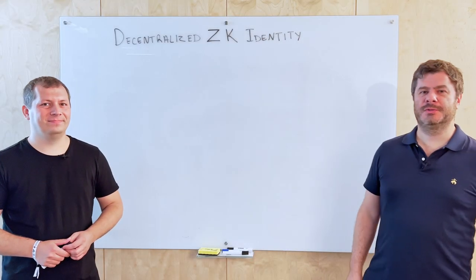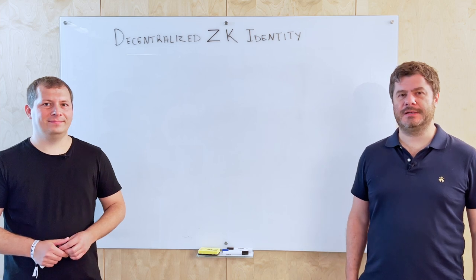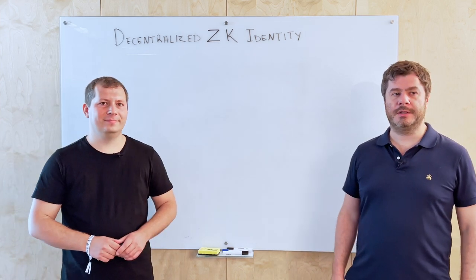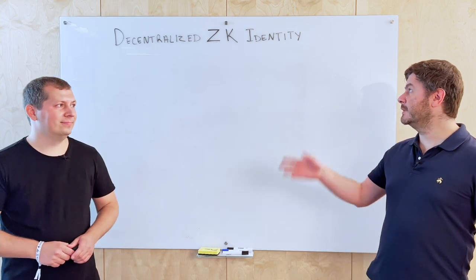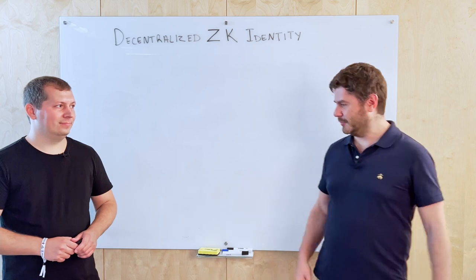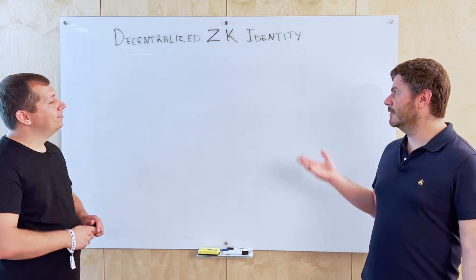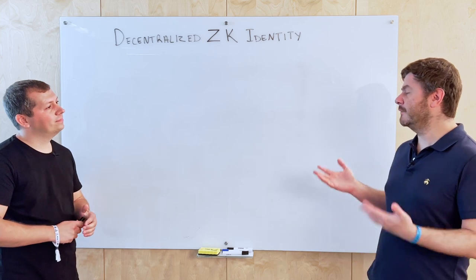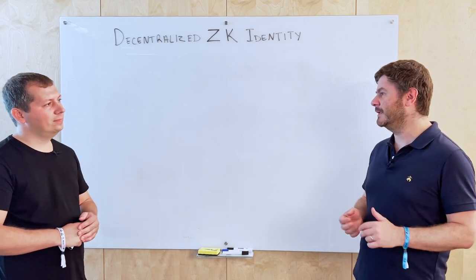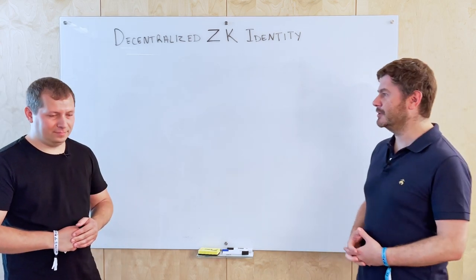Hello everyone and welcome to another session of ZK Whiteboard Sessions. Today I'm here with Alexander from Polygon ID, and we're going to be talking about decentralized ZK identity and how zero-knowledge proofs fit into that. Let's start out with giving a bit of context — how do you think about identity and what different types of identity are there?